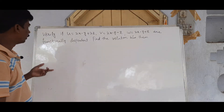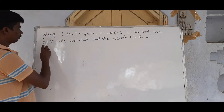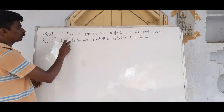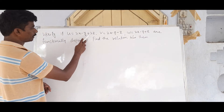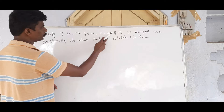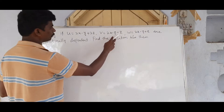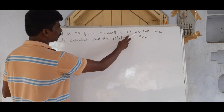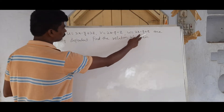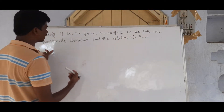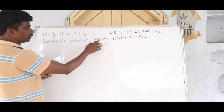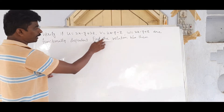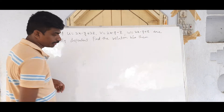Verify if u = 2x − y + 3z, v = 2x − y − z, w = 2x − y + z are functionally dependent, and find the relation between them.